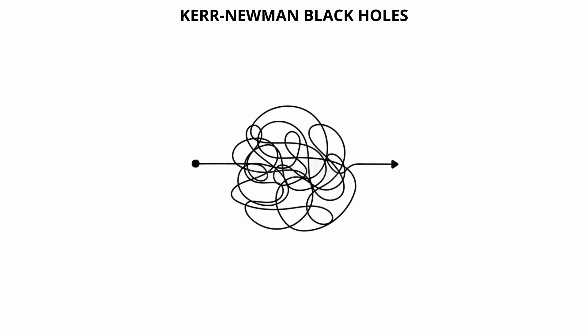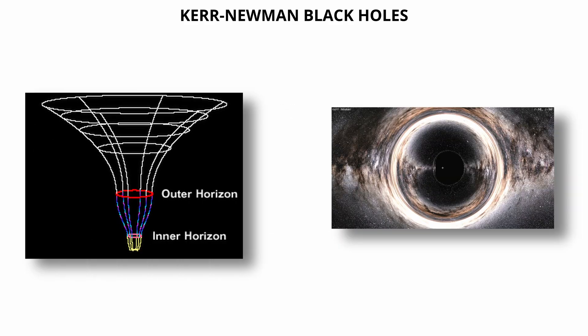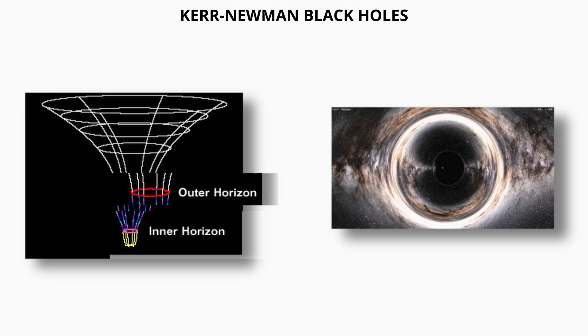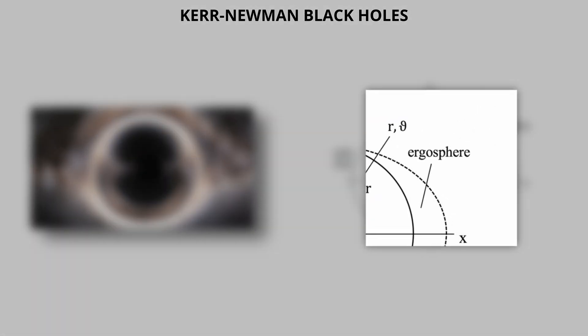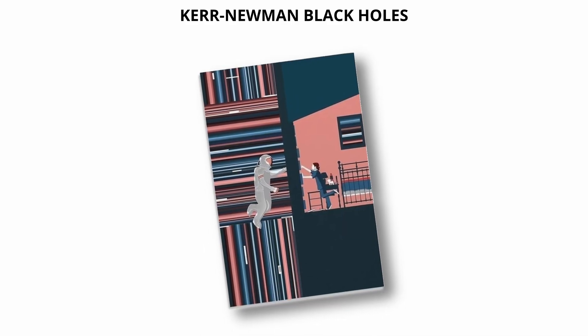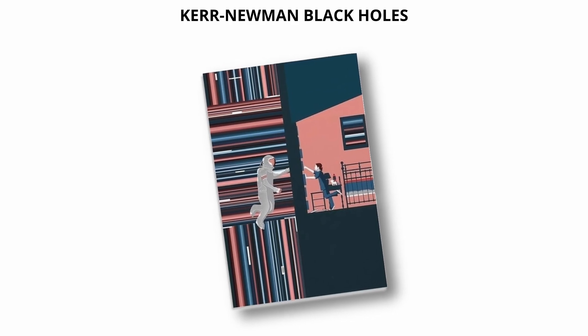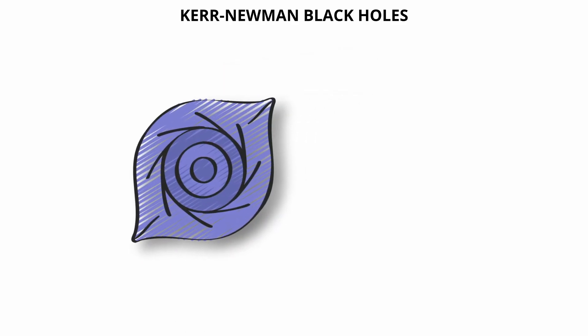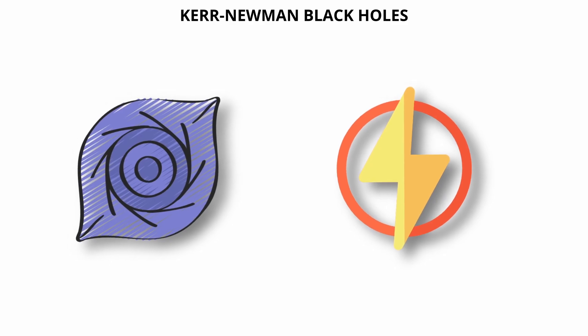The geometry of a Kerr-Newman black hole is highly intricate. Like Reissner-Nordstrom black holes, they have two horizons: an outer event horizon and an inner Cauchy horizon. However, because they also rotate, they feature an ergosphere, a region outside the event horizon where spacetime is dragged in the direction of the black hole's spin. This ergosphere, combined with the black hole's charge, creates a uniquely distorted and dynamic region of spacetime.